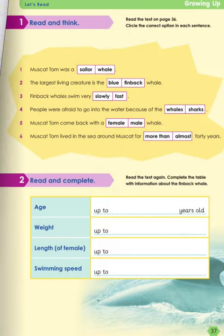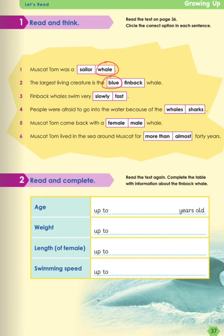Isn't that interesting? Now after we read, let's solve this one together — read and think. Circle the correct option in each sentence. Number 1: Muscat Tom was a sailor or whale? Correct — whale. Number 2: the largest living creature is the blue or finback whale? It's the blue whale. Number 3: finback whales swim very slowly or fast? Correct — fast. Number 4: people were afraid to go into the water because of the whales or sharks? Correct — sharks. Number 5: Muscat Tom came back with a female or a male whale? Yes — female. Number 6: Muscat Tom lived in the sea around Muscat for more than 40 years or almost 40 years? Correct — almost.